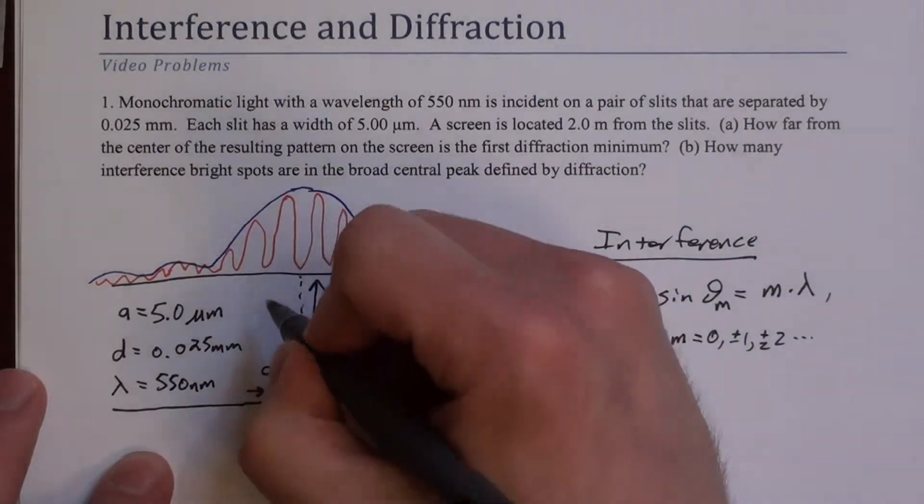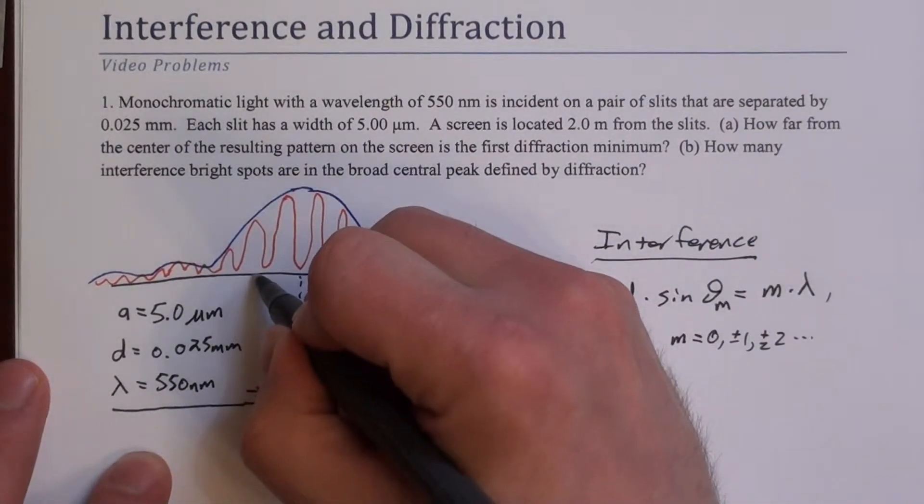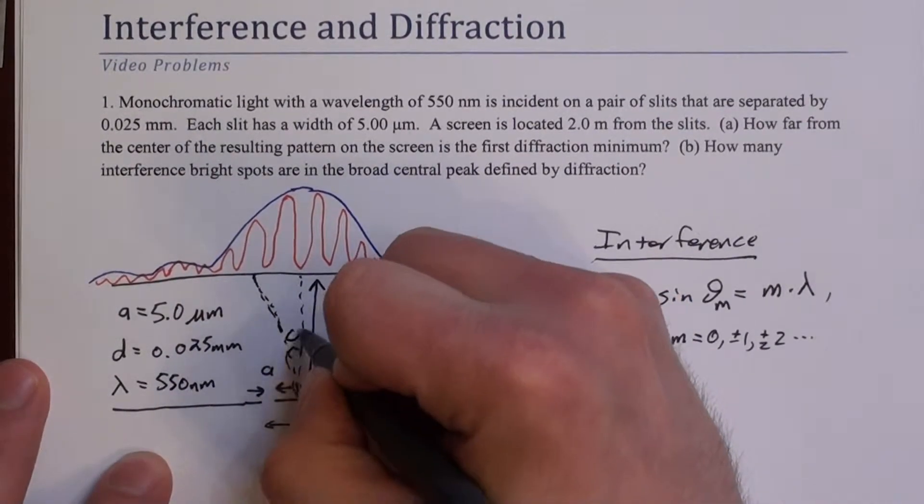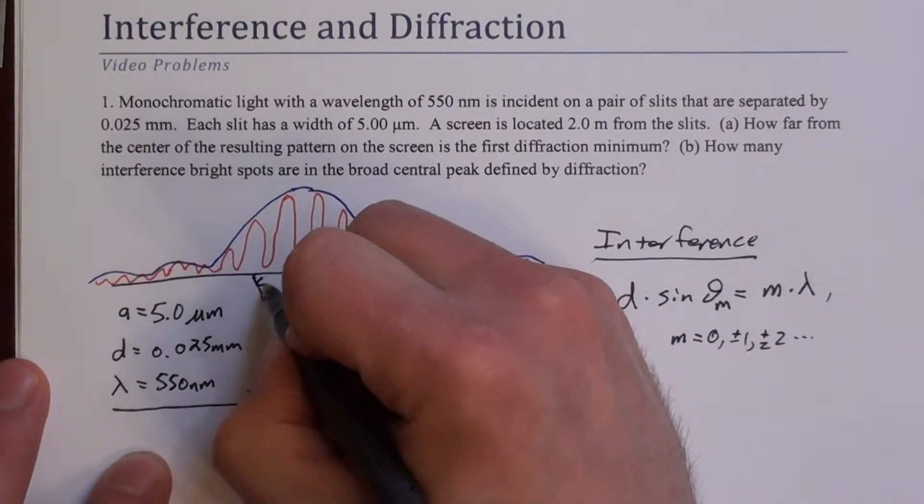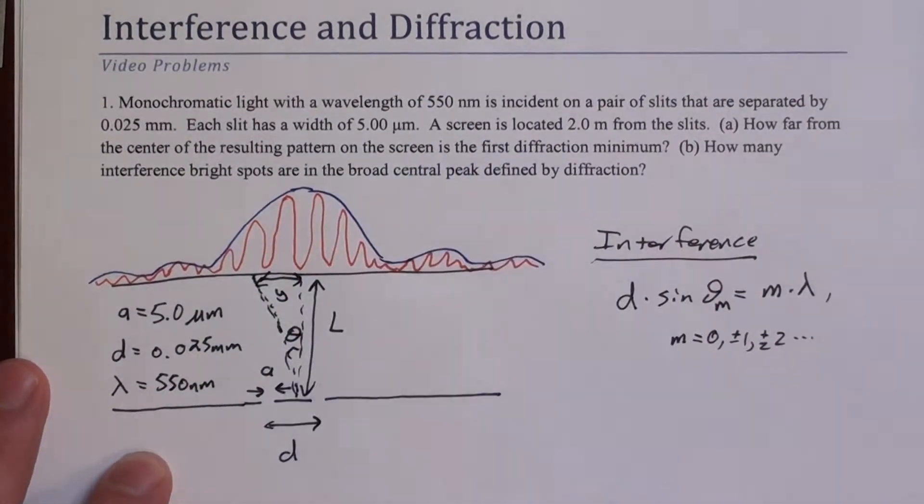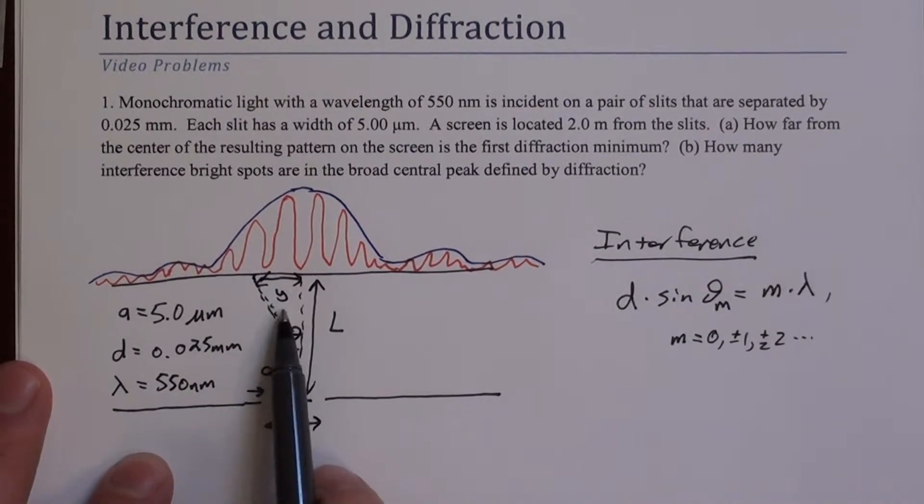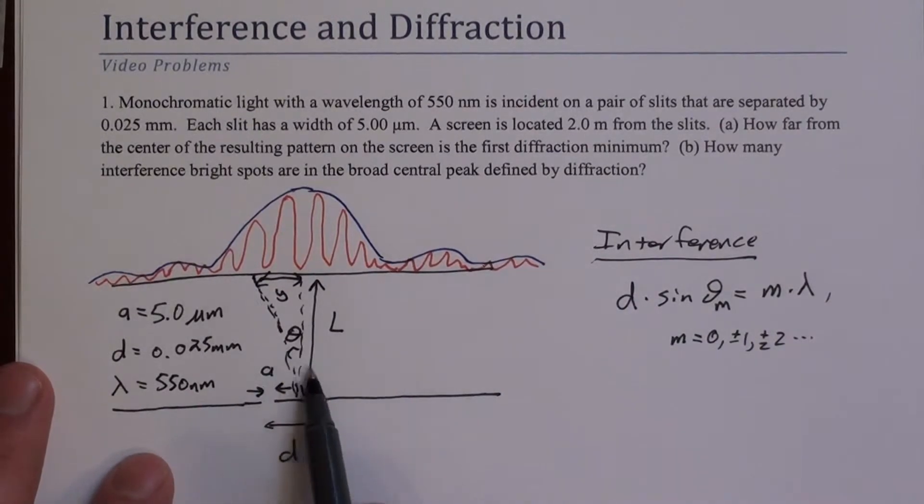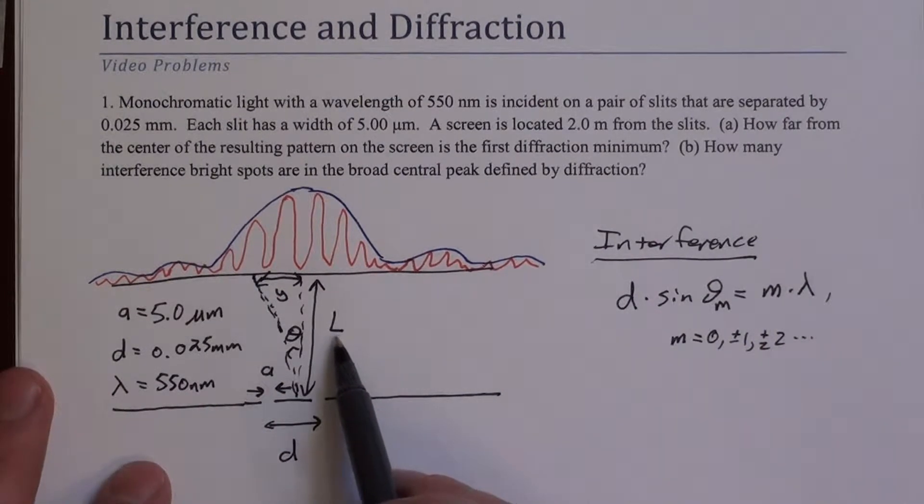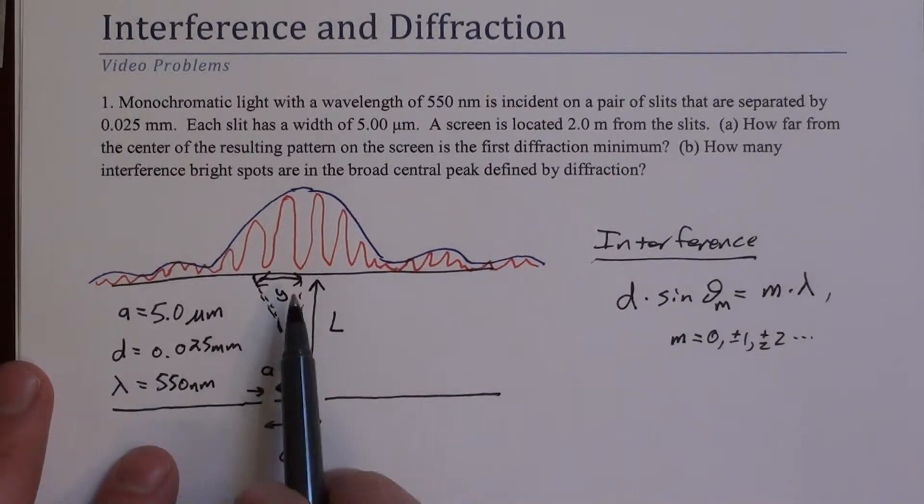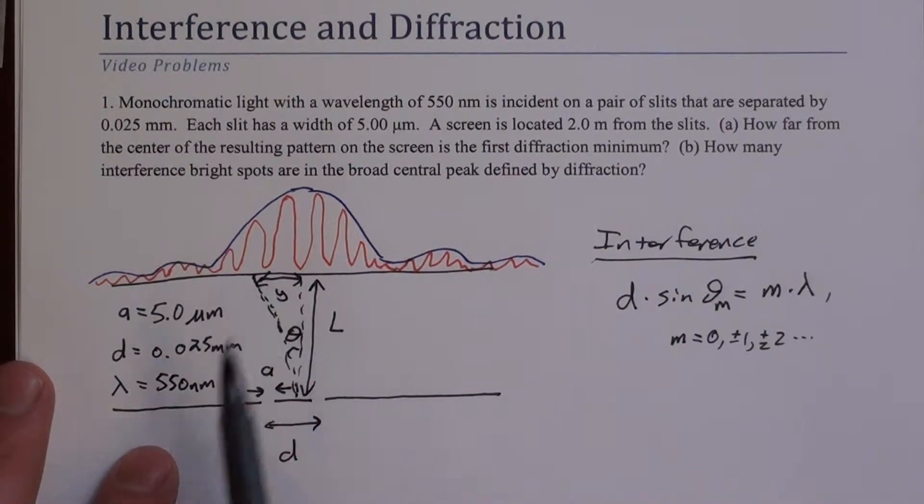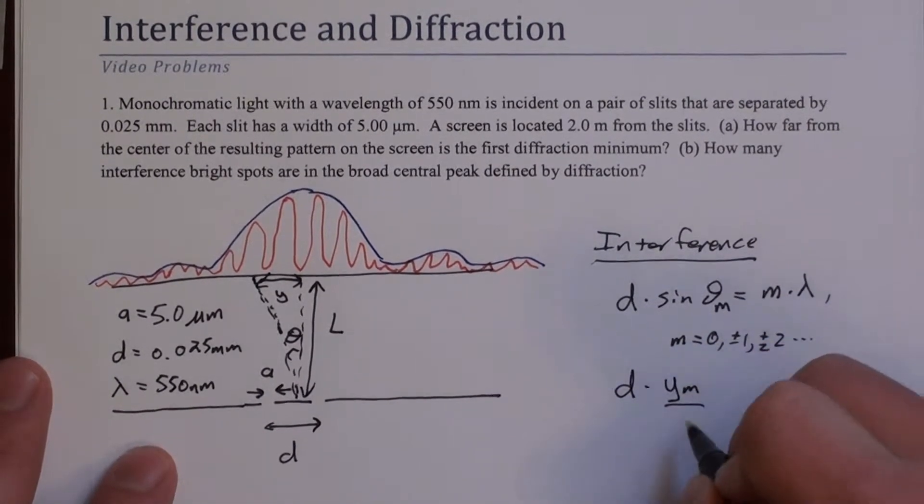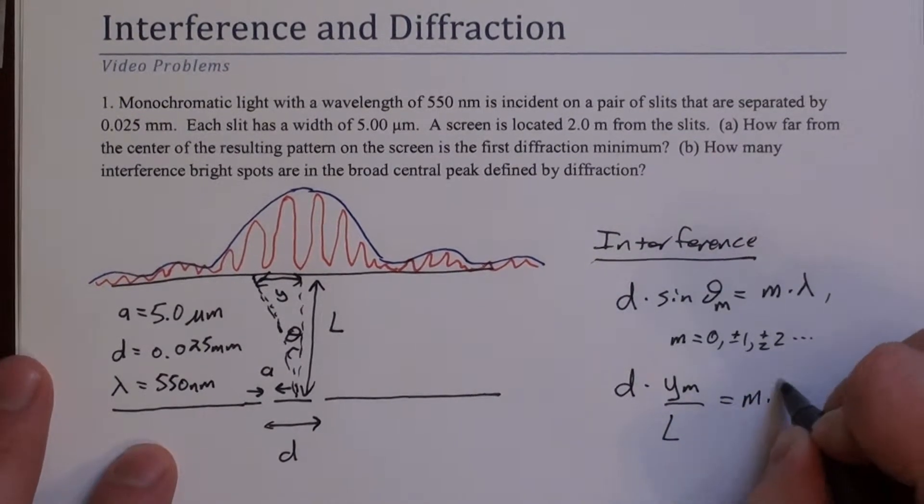Theta is the angle to a point of interest, so to a particular point here. We could also define some vertical distance, or horizontal distance y here. If L is big compared to Y, then we can rewrite this as D times Y sub M over L equals M lambda.